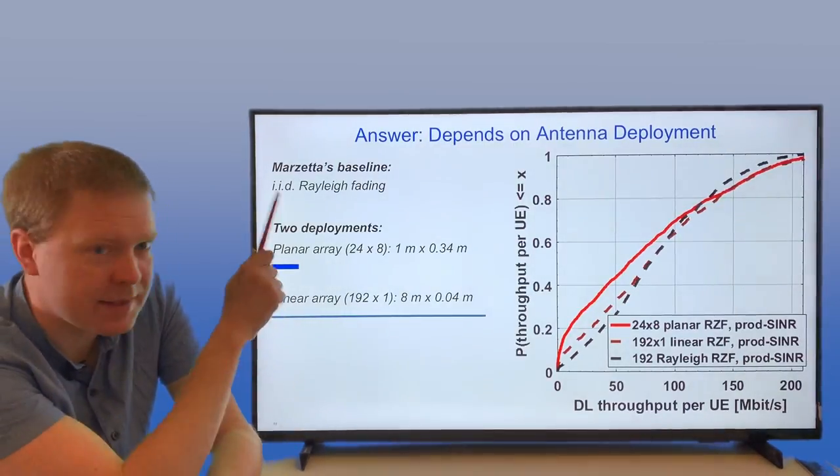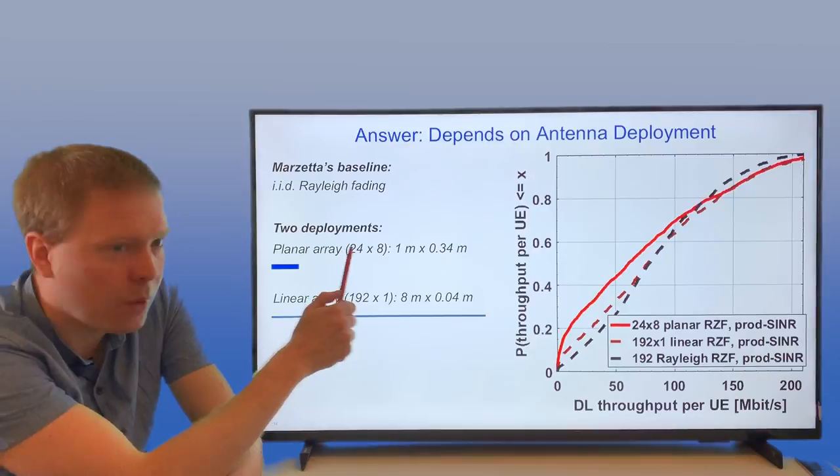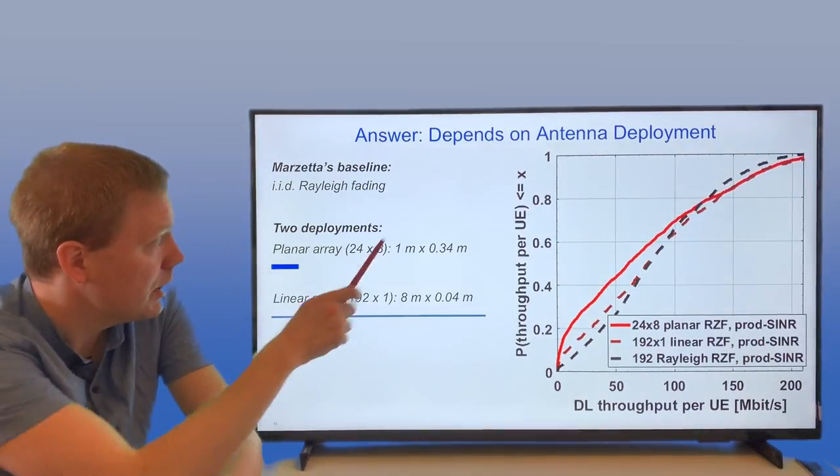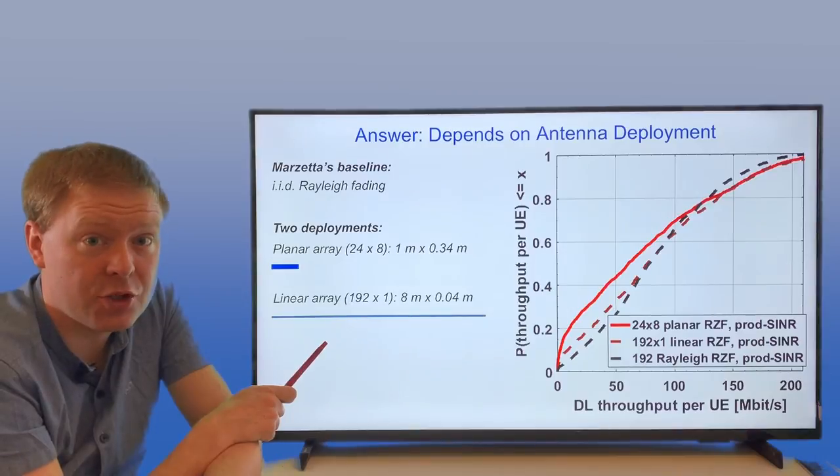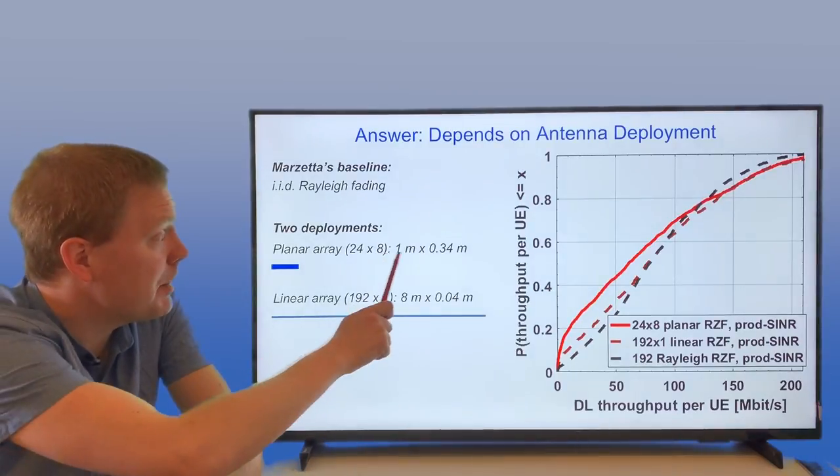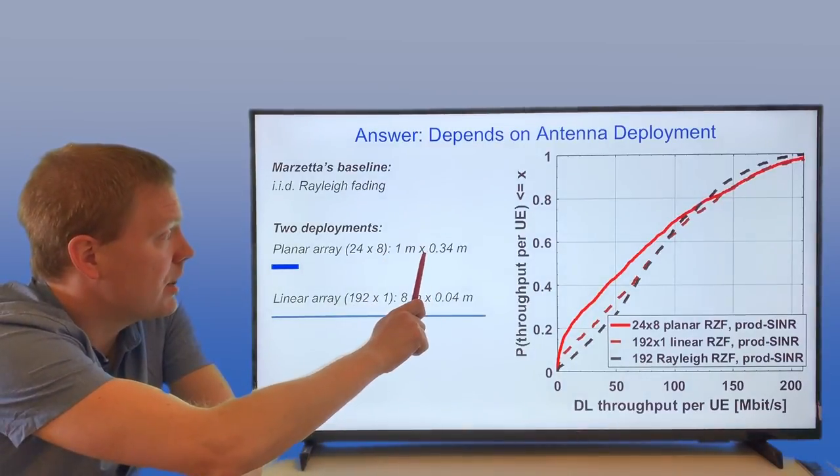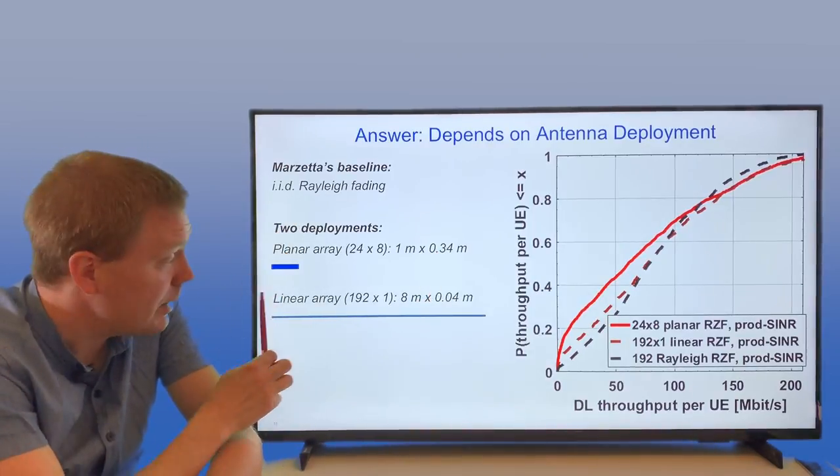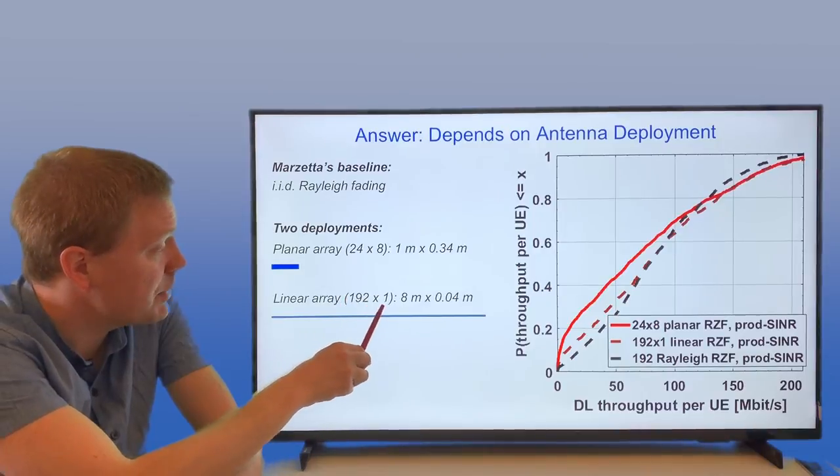Then we have two real setups: one with a planar array with 24 antennas horizontally and 8 antennas vertically - so you have 192 antennas in total. It's 1 meter wide and 0.34 meters tall. Then you have a uniform linear array, so it's 192 times 1. It's 8 meters long and not very tall at all.